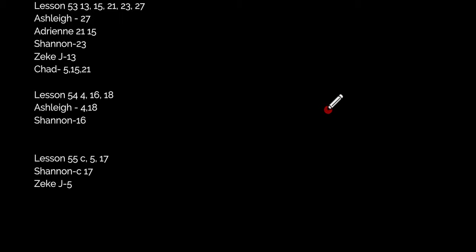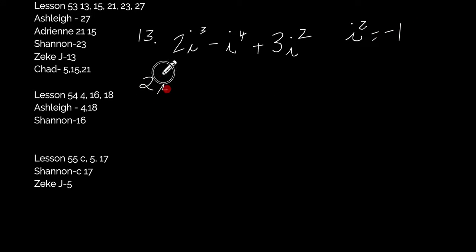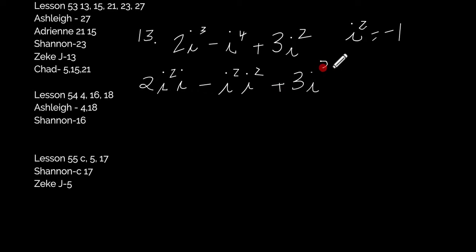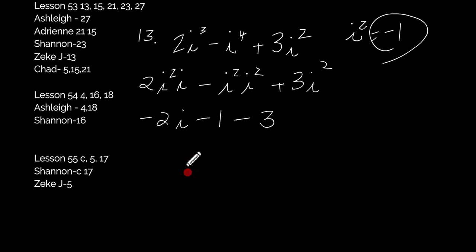Number 13 — 2i cubed minus i to the fourth plus 3i squared. Since i squared equals negative 1, rewrite: i cubed is i squared times i, and i to the fourth is i squared times i squared. Substituting: 2 times negative 1 times i equals negative 2i. Negative i to the fourth: negative 1 times negative 1 equals positive 1, but with the negative sign it becomes negative 1. And 3i squared equals negative 3. Real part: negative 1 minus 3 equals negative 4. Answer: negative 4 minus 2i.